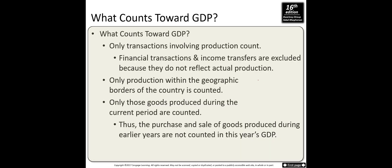Only transactions involving production count in GDP. Financial transactions like buying bonds or stocks are not included in GDP. Income transfers are also excluded because they do not reflect actual production — for instance, social security payments, unemployment insurance, and veteran payments are not included in GDP. The government collects taxes and redistributes income to people who need it, but there is no production in return for this change of income.